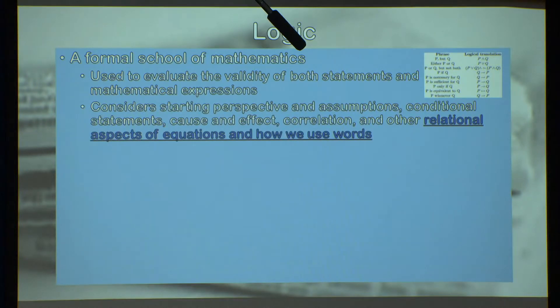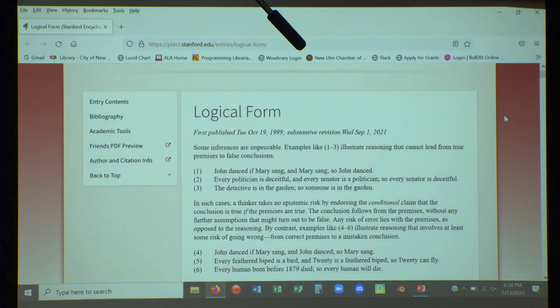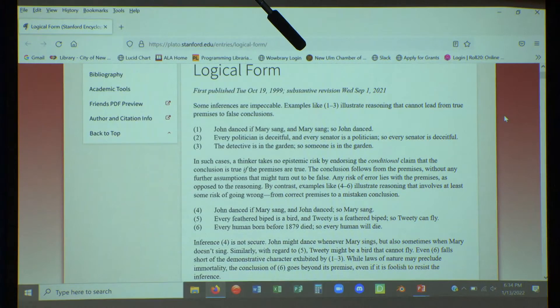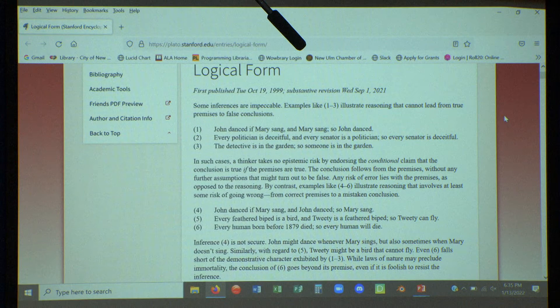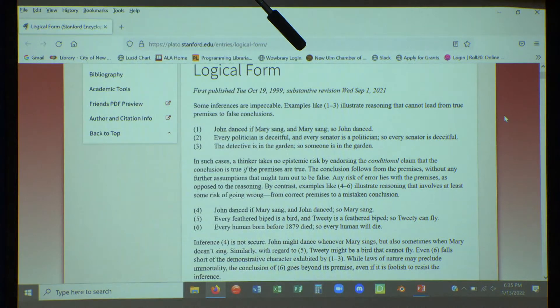Logic considers starting perspective and assumptions, conditional statements, cause and effect, correlation, and other relational aspects of equations and how we use words. So we're going to go over to the Stanford Plato Institute. Logical form is what we use to evaluate a statement for logical validity or consistency. We can look at a statement and say that yes, that statement is valid, meaning it makes logical sense mathematically. Or we can look at it and say no, it doesn't. The top three here are examples of logically valid statements and the bottom three are not.